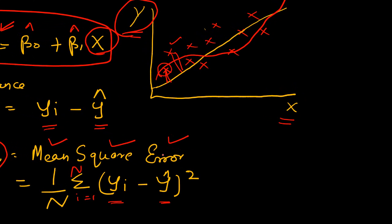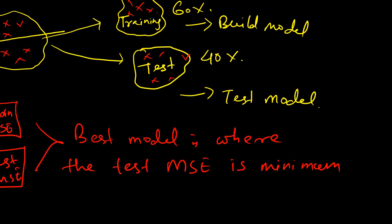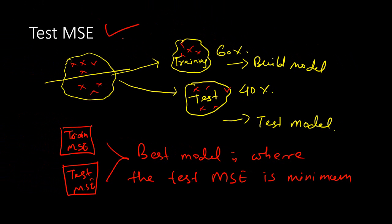It gives a value, and we always want this mean square error to be minimum. The next thing is, we'll introduce what is known as a test mean square error. Remember, when you build a model, you build on a training data set.